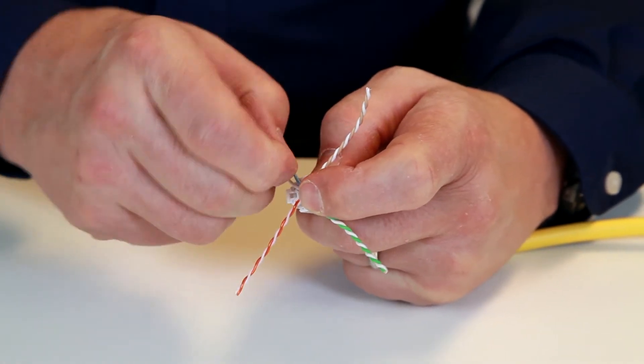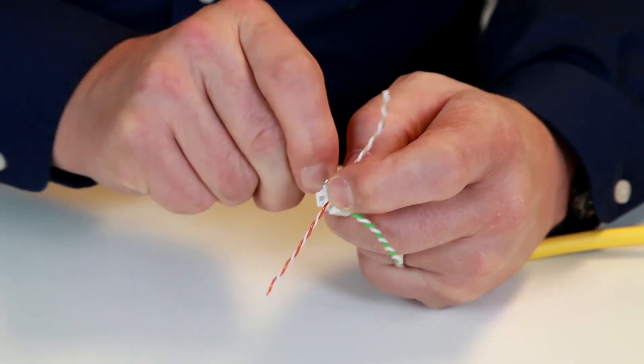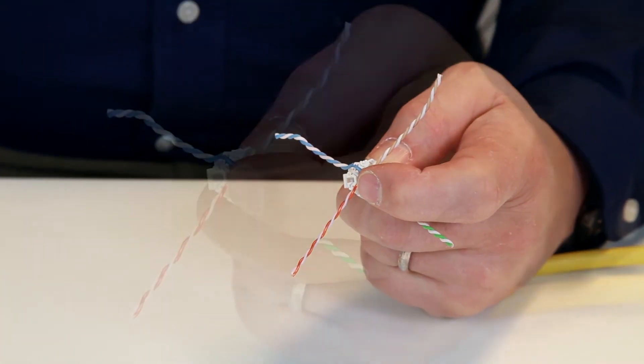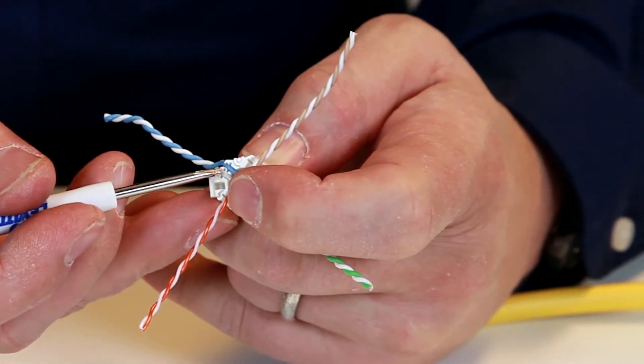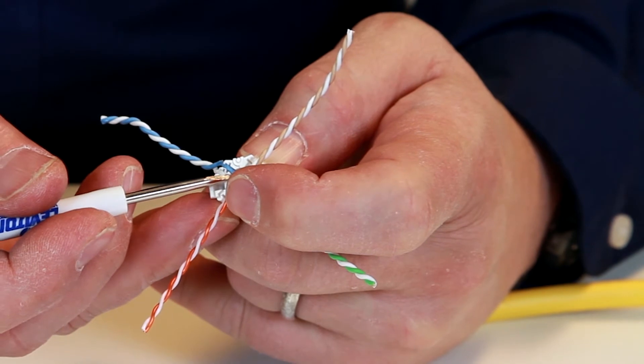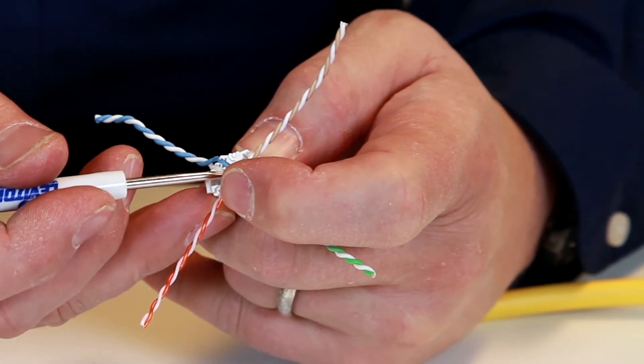So I've got my pair opened and I'm going to pull it down into the wire channel. Notice that the entire center element of the wire channel shows. You don't want to have any crossover here.